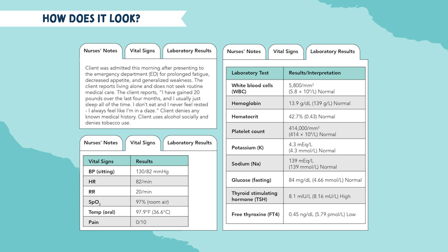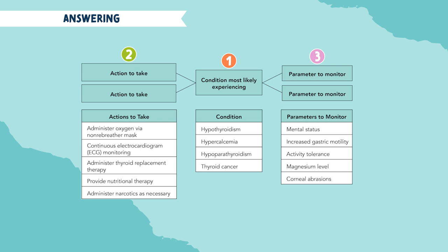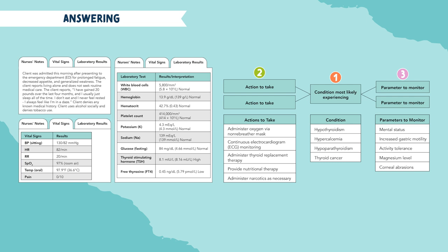After you assess the information and the situation, you should now look to answer the question. When looking at the Bowtie, you will see different boxes with columns underneath. The center box asks the nurse to address the condition — based on all the information, what is the patient most likely experiencing? We're not diagnosing; nurses don't diagnose. But we do need to have an idea of what is going on with our patient, recognizing those cues, because oftentimes nurses are the first ones to pick up on a status change.